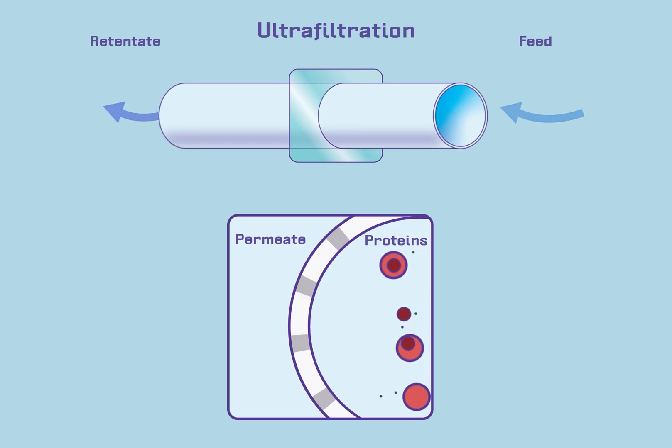To isolate proteins in the 3 kilodalton to 1000 kilodalton range in a solution, ultrafiltration membranes having pores smaller than 0.1 micron are used. In this case, proteins larger than the pores are retained, while smaller molecules such as water and solutes pass into the permeate.